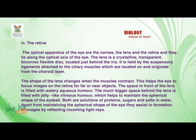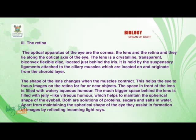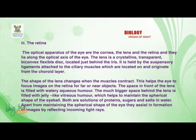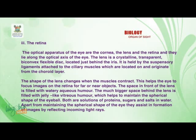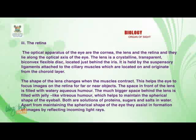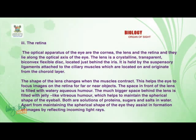The lens is a crystalline, transparent, biconvex, flexible disc located just behind the iris. It is held by the suspensory ligaments attached to the ciliary muscles, which are located on and originate from the choroid layer. The shape of the lens changes when the muscles contract, and this helps the eye to focus images on the retina for far or near objects.